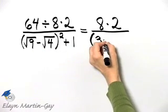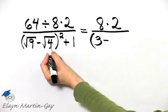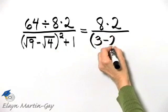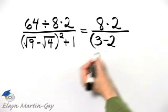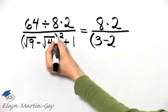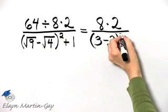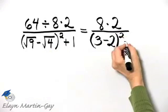Then minus. What is the square root of 4? The square root of 4 is 2 because 2 times 2 is 4. And then I have close parentheses, squared, plus 1.